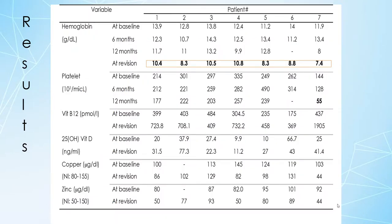Hemoglobin was decreased in all patients: 10, 8, 10.5, 10, 8, 8, 7.7. Platelet count was significantly decreased in one patient at revision time. That patient unfortunately had a concurrent hematology problem; bone marrow biopsy was performed, and we lost time consulting oncologists, leading to delayed surgery. Unfortunately, we lost that patient. For other microelements, there were no major problems.